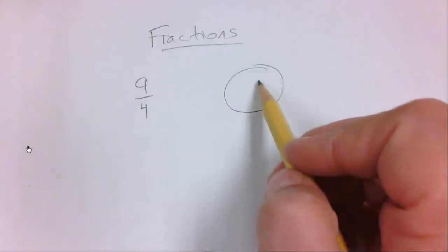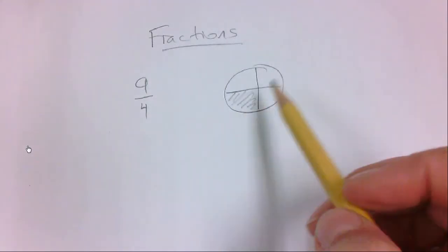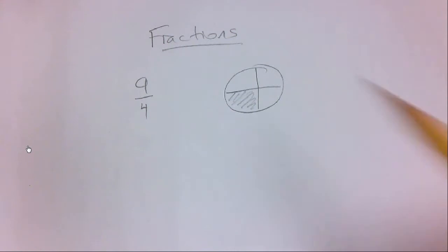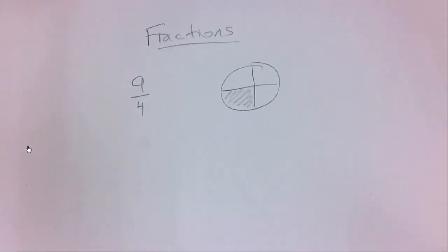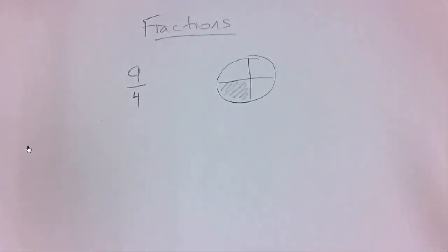Think of them as 9 fourths. What it means is a fourth is if you take a circle and you split it into 4 equal parts, and this part here is called a fourth. 9 fourths would mean 9 of these.